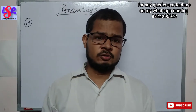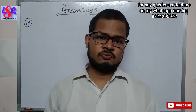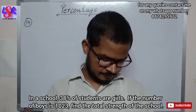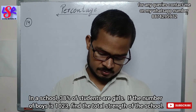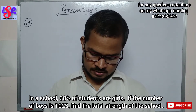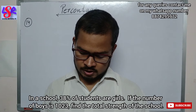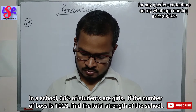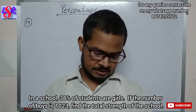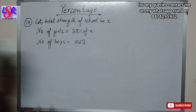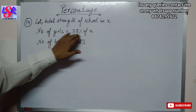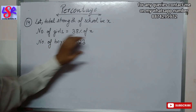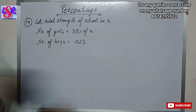Now we will do question number 14. In a school, 38% of the students are girls. If the number of boys is 1023, find the total strength of the school. Let total strength of the school be x. Number of girls equals 38% of x, and the number of boys is given as 1023.